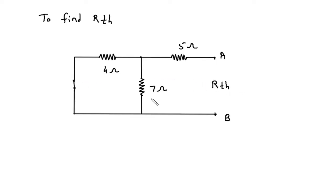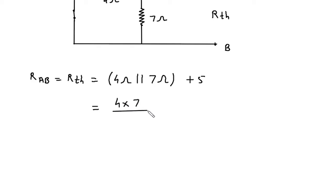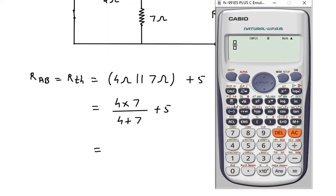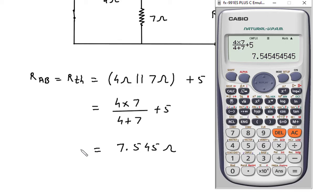From this, RTH will be: RAB is equal to RTH. We can see this 4 ohm is in parallel with 7 ohm, then it is in series with this 5 ohm. So RTH equals 4 into 7 divided by 4 plus 7, plus 5, which gives 7.545 ohm.